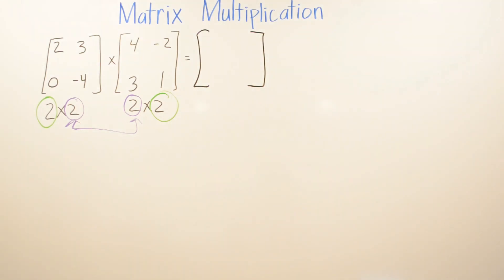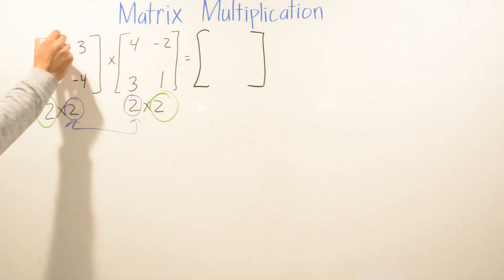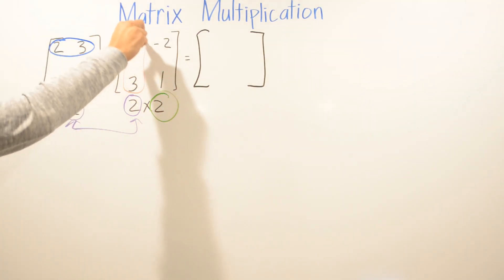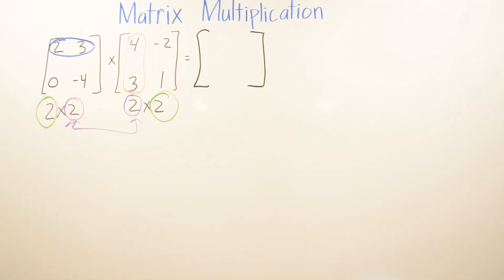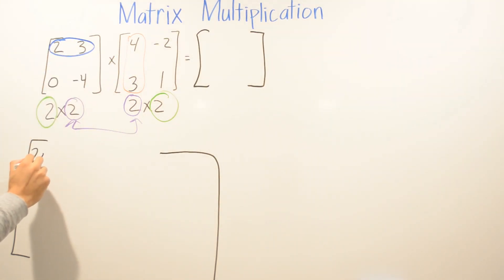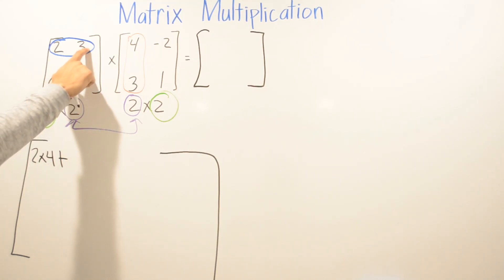Now we're going to start on how to multiply — what numbers are we going to multiply to get those answers. The way we start is by multiplying the first row of the first matrix by the first column of the second matrix. So we're going to multiply 2 times 4, and we're also going to add 3 times 3.